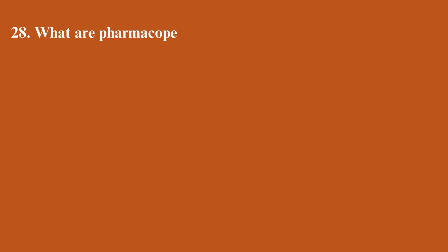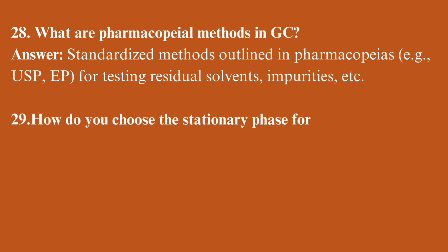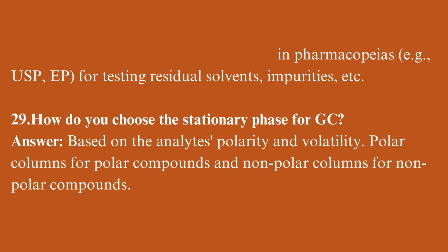What are pharmacopoeal methods in GC? Standardized methods outlined in pharmacopoeias, e.g., USP or EP, for testing residual solvents and impurities. How do you choose the stationary phase for GC? Based on the analyte's polarity and volatility. Polar columns for polar compounds and non-polar columns for non-polar compounds.